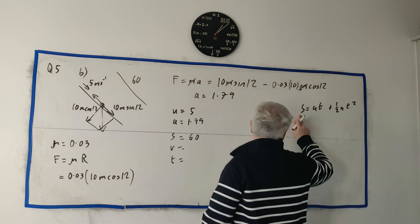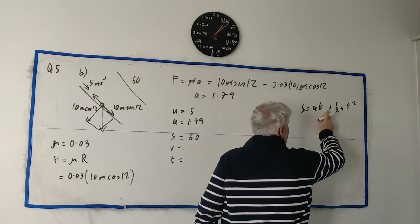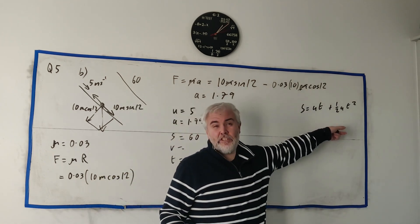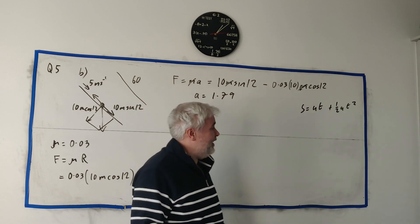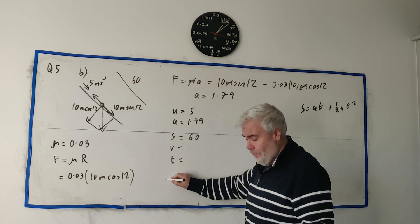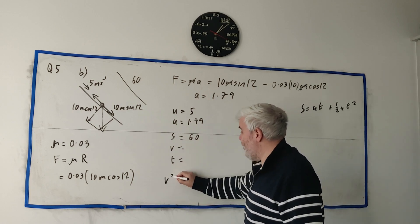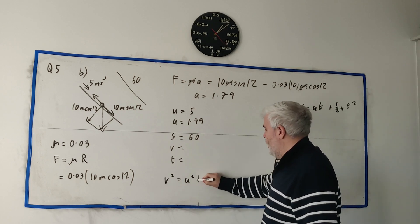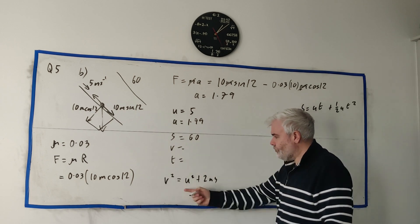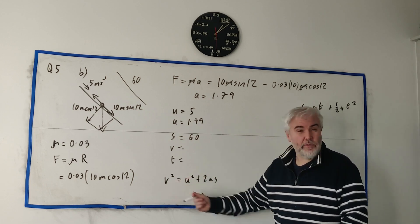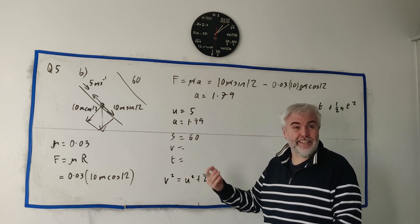You could find t first. The equation s is equal ut plus a half a t squared. We know s, we know u, we know a. We're just missing these t's. So you could use this, fill these numbers in, and then you'd have to solve a quadratic though. So that'd be a bit messy. Personally, what I'm going to do is, I'm going to find v first. I'm going to use, same as we did last time. V squared is equal u squared plus 2as. We know u, we know a, and we know s. So if we find v, then I'll find t later.